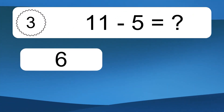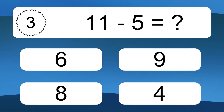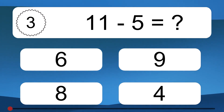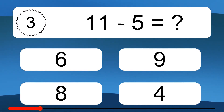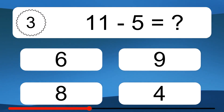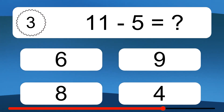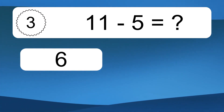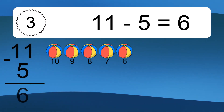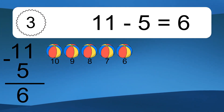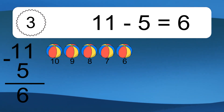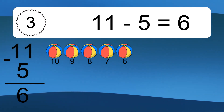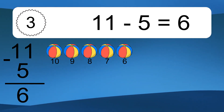11 minus 5 equals what? 11 minus 5 equals 6. Let's count it. 10, 9, 8, 7, 6.